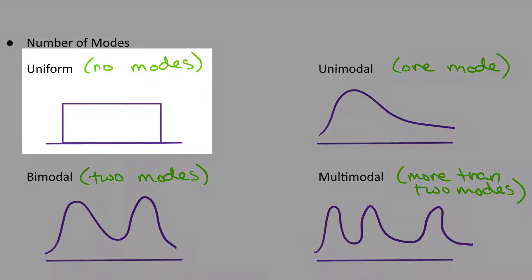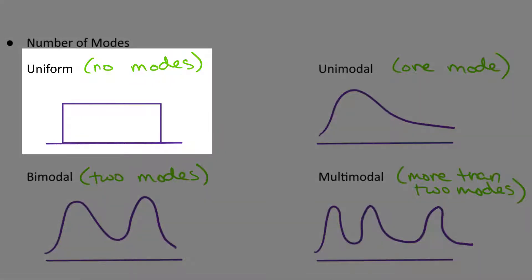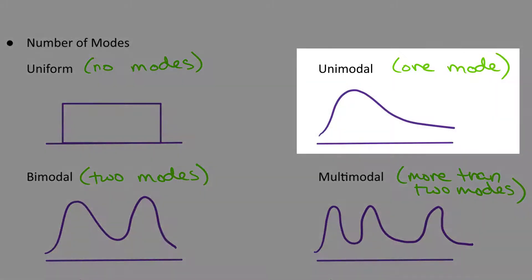The uniform distribution is unique where this is a rectangular shape. This will be important, especially in chapter 2. We'll see this come back again. Unimodal is any distribution. It could be skewed right, like this distribution here, skewed left, approximately symmetric. But, the idea is there's only one mode, one peak.